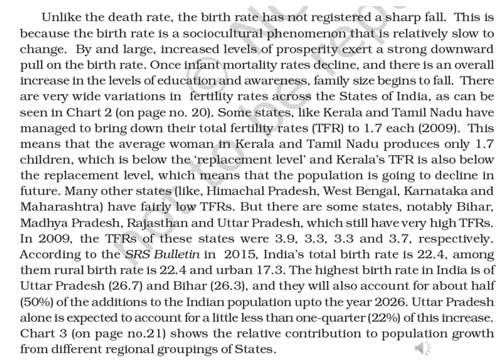According to SRS Bulletin, in 2015, India's total birth rate is 22.4, among them rural birth rate is 22.4 and urban 17.3. The highest birth rate in India is of Uttar Pradesh at 26.7 and Bihar at 26.3. They will also account for about half — 50% — of the addition to the Indian population up to the year 2026. Uttar Pradesh alone is expected to account for just under one quarter, that is 22%, of this increase.